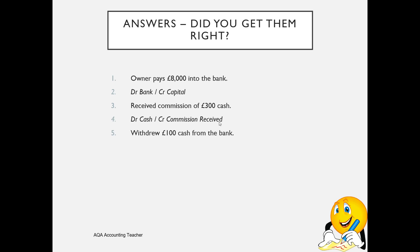Withdrew £100 cash from the bank — this is slightly trickier in that we've got two assets involved: the cash account and the bank account. Think about which one has increased: debit the one that's increased, credit the one that's decreased. We've taken £100 in cash from the bank, so we debit cash because we're increasing the cash account, and credit the bank. If you put debit drawings credit bank, I'll allow half a mark, but the correct answer is debit cash, credit bank.